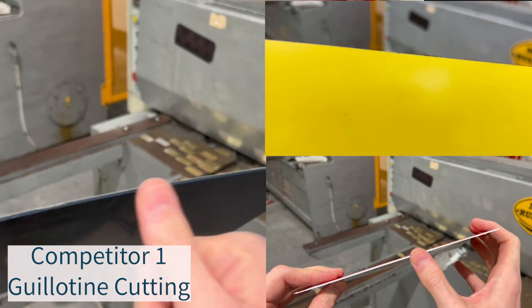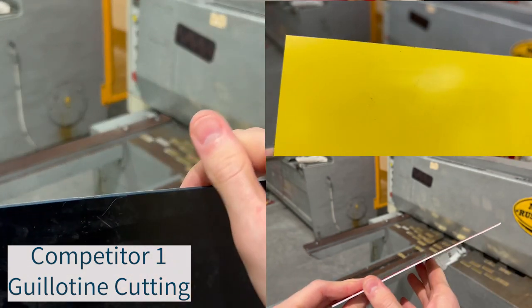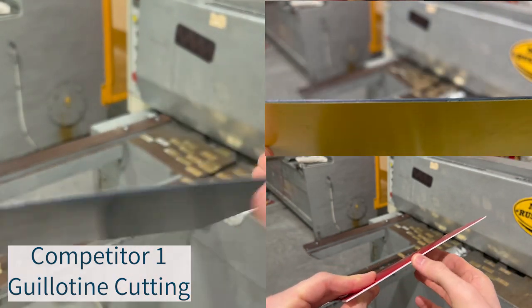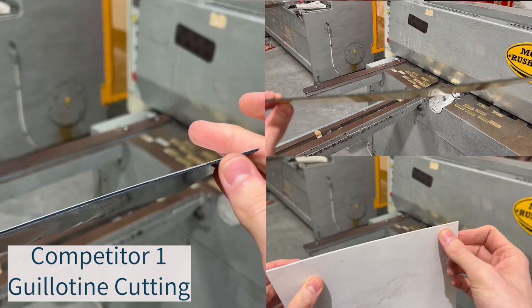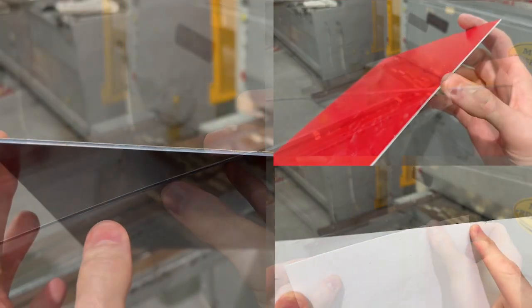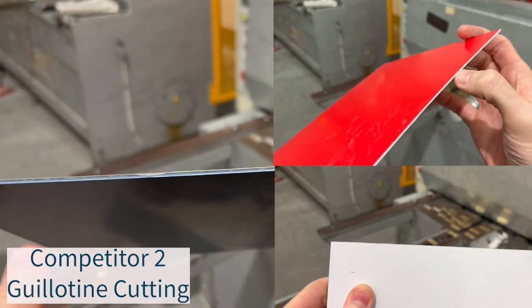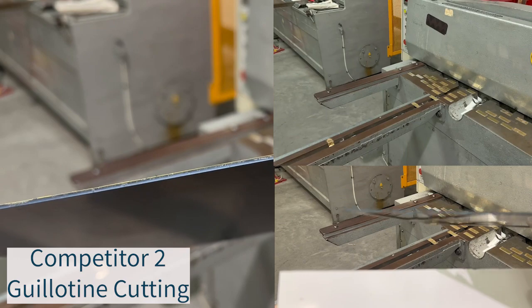On competitor one the yellow black material features a noticeably more jagged edge while the other materials are not as smooth as their Trotec counterparts. The guillotined edge of material two is arguably the worst with a lumpy jagged finish.